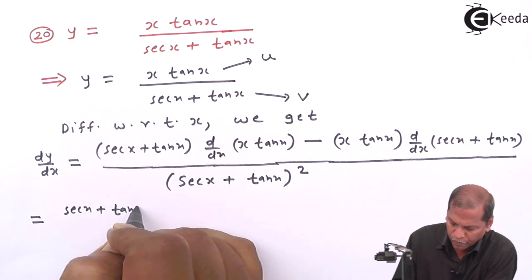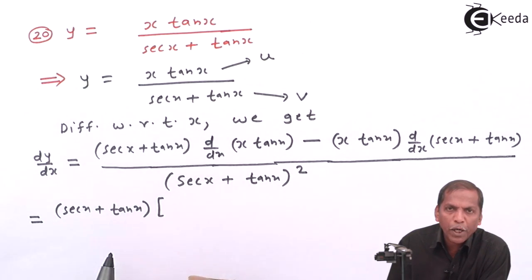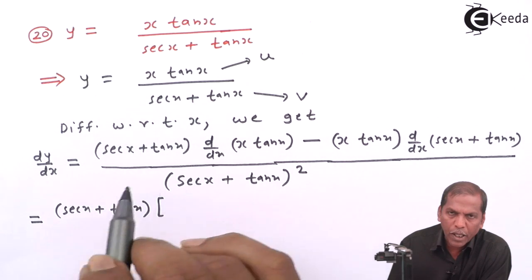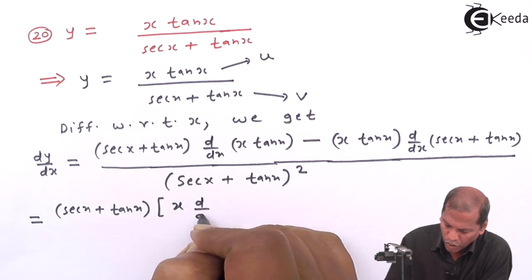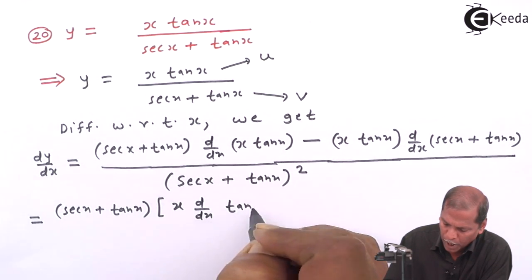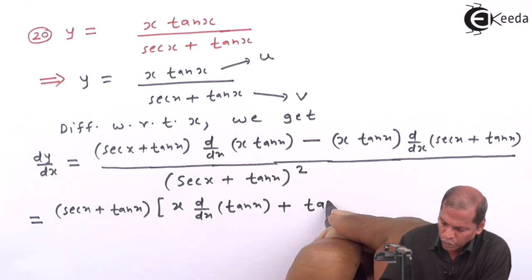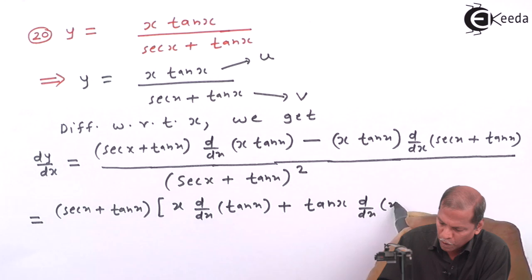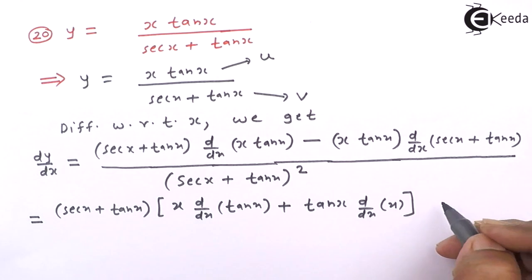In the next step, the derivative of x times tan(x) can be found using the product rule (u times v rule). Here x is considered as u and tan(x) as v. So we write x as it is, then d/dx of tan(x), plus tan(x) as it is, into d/dx of x. The square bracket is then completed.